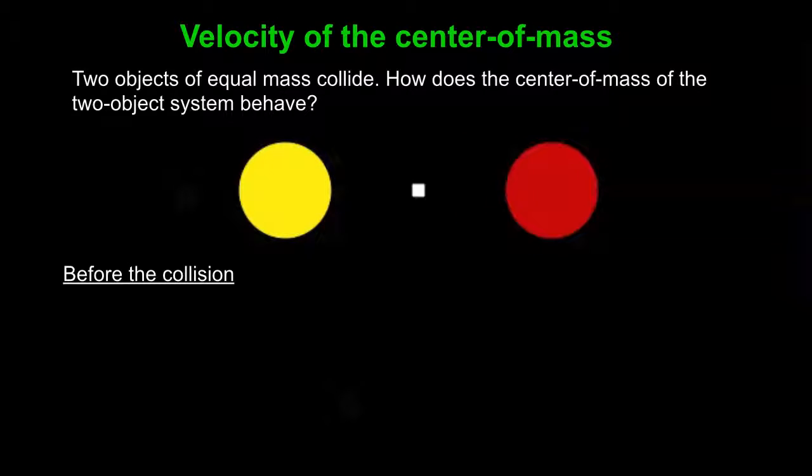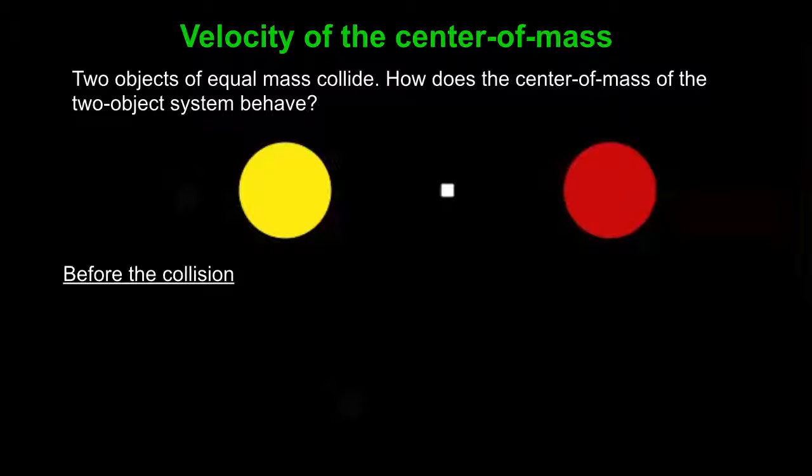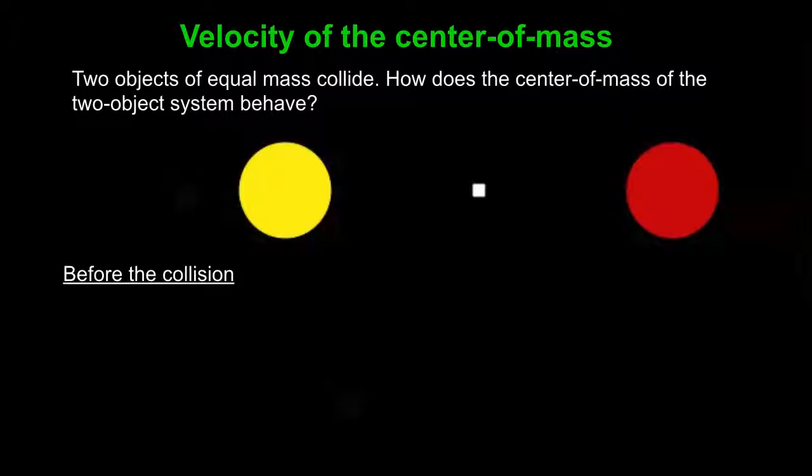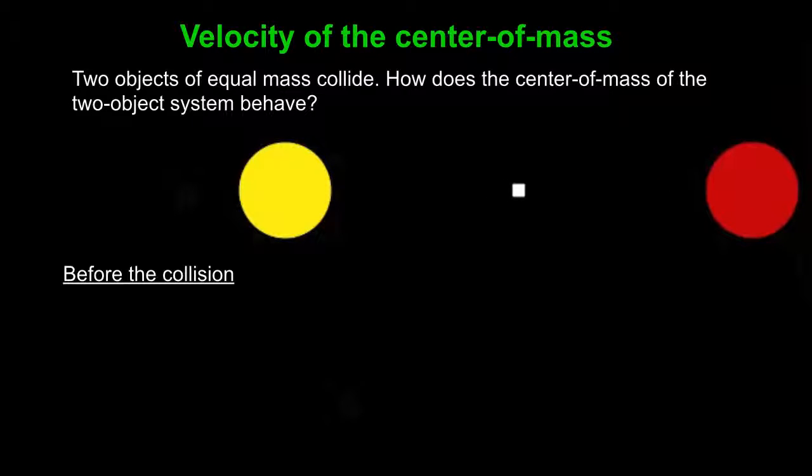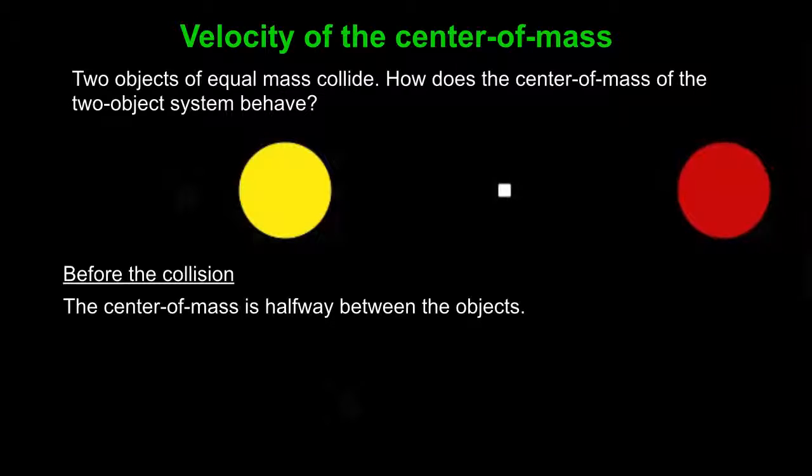Well, what you notice is the yellow object's motion is completely different before and after. The red object's motion before and after is completely different. But the center of mass motion is the same.